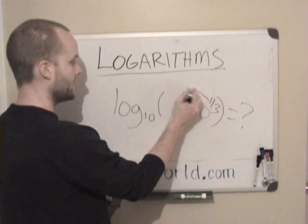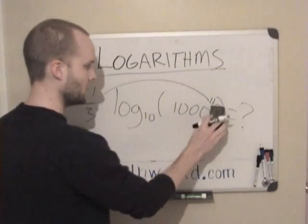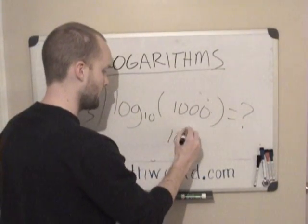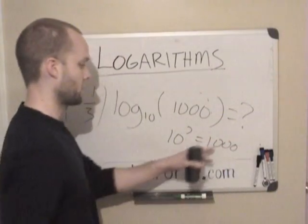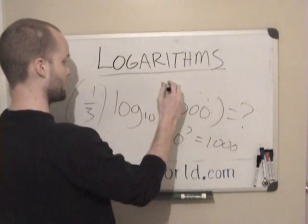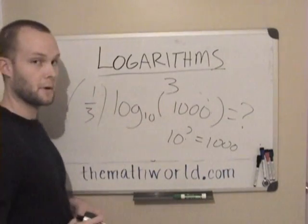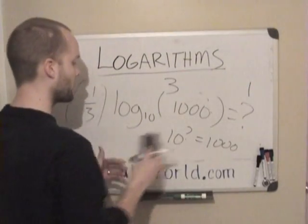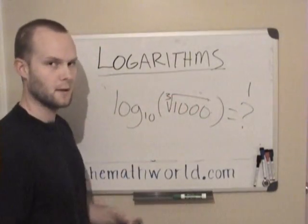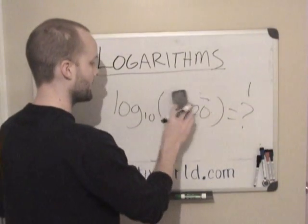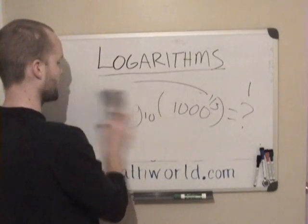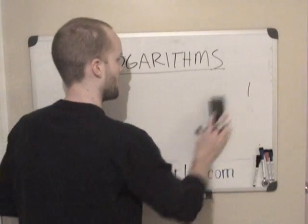So the cube root is the same as raising it to the 1 third power. And like we talked about before, any exponent we have up here, we can just take it and put it out here. So we can completely get rid of this, and we're going to multiply 1 third by whatever answer we get here. And so we have 10 to the what power equals 1,000? And so 10 to the third power, 10 times 10 times 10 is going to equal 1,000. So we have 3 here, and then 3 times 1 third is 1. So before, if you were to see this problem, and you saw log base 10, the cube root of 1,000, you may have been like, what in the heck is going on? But just know that any time you see this, you can make it a fraction, and then bring that fraction out here, and then it's easier to solve.